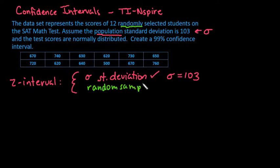The last condition is the central limit theorem has to kick in. Our sample size either has to be greater than or equal to 30, which if we look we only have 12.